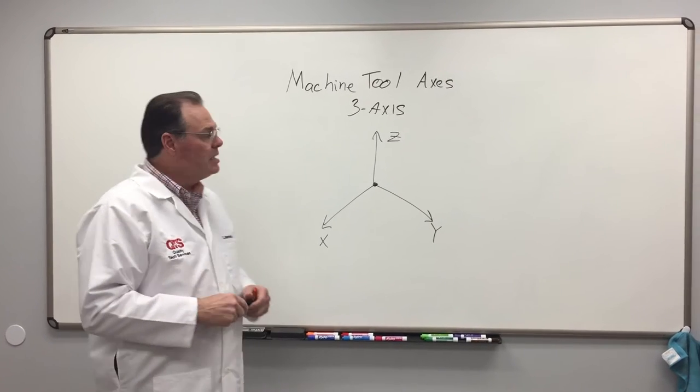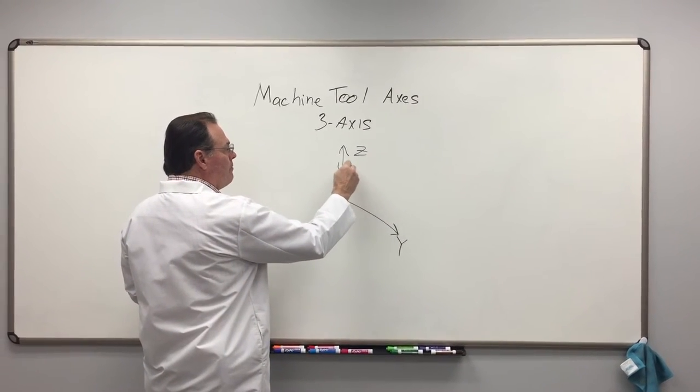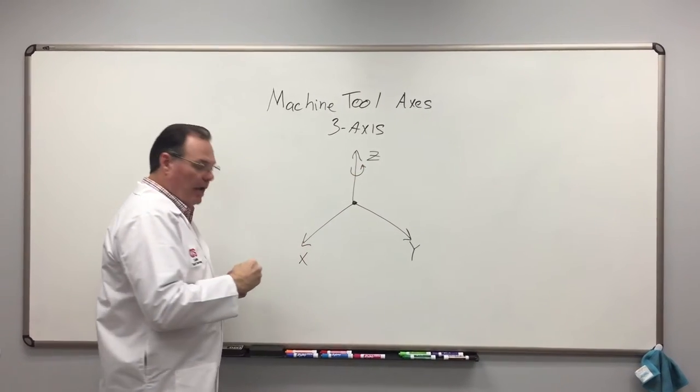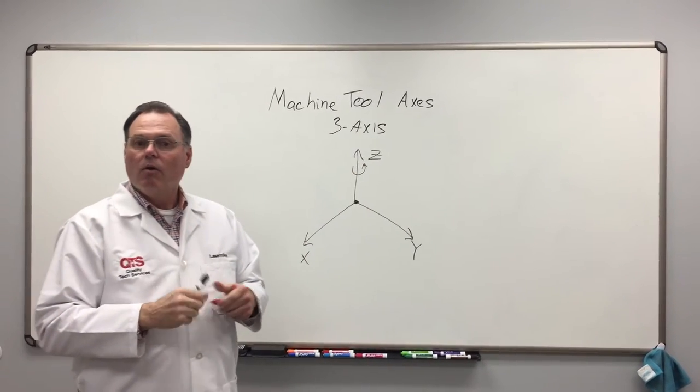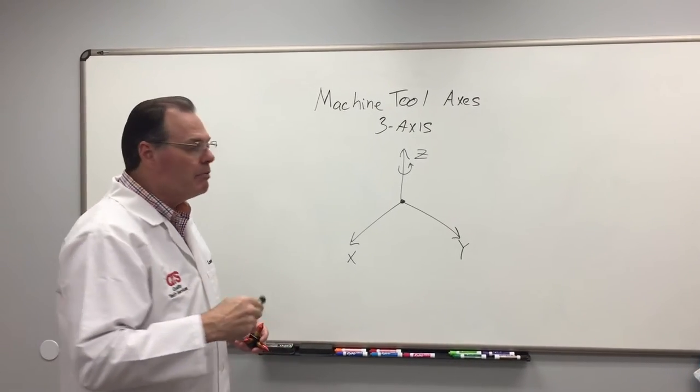Typically the z-axis is where the spindle is and that would be a rotational axis on a vertical machine tool. That would be where your tool would go and would rotate.